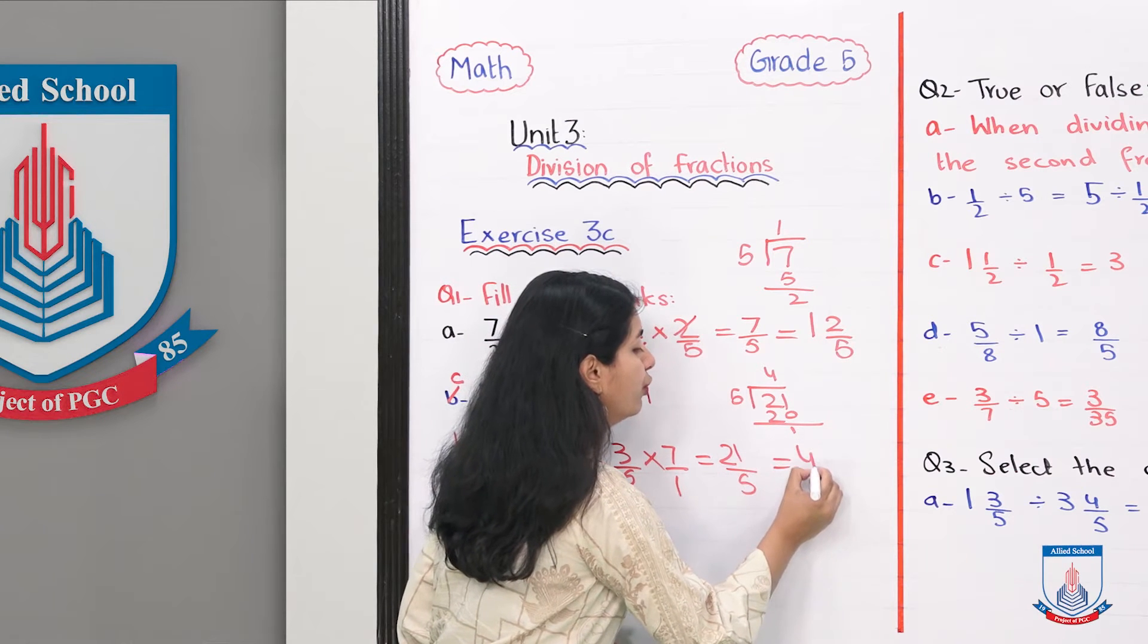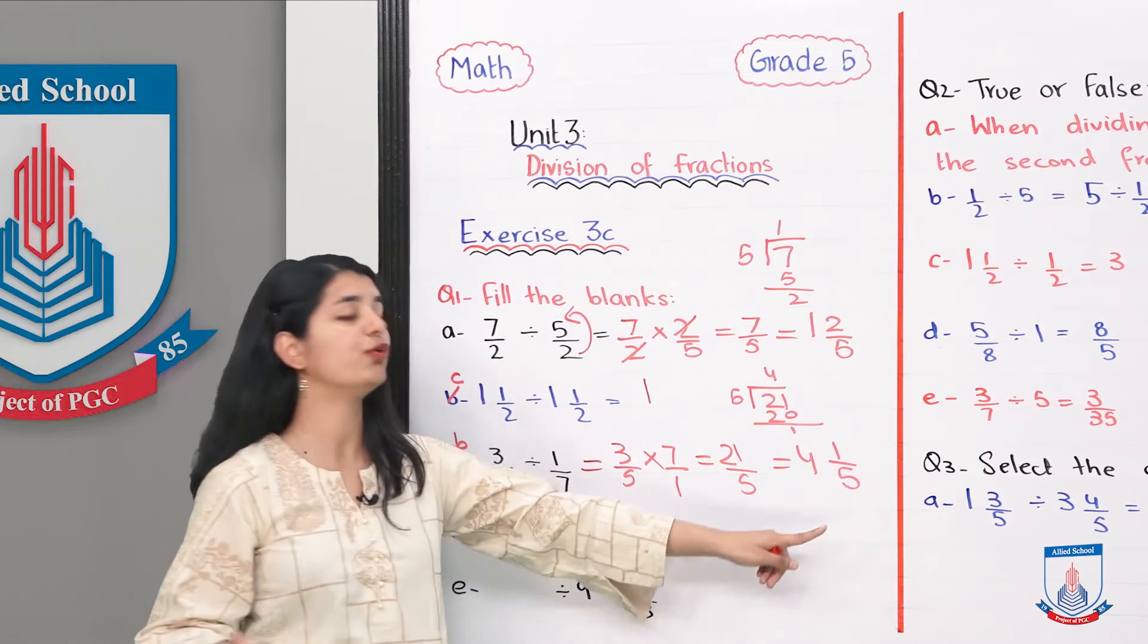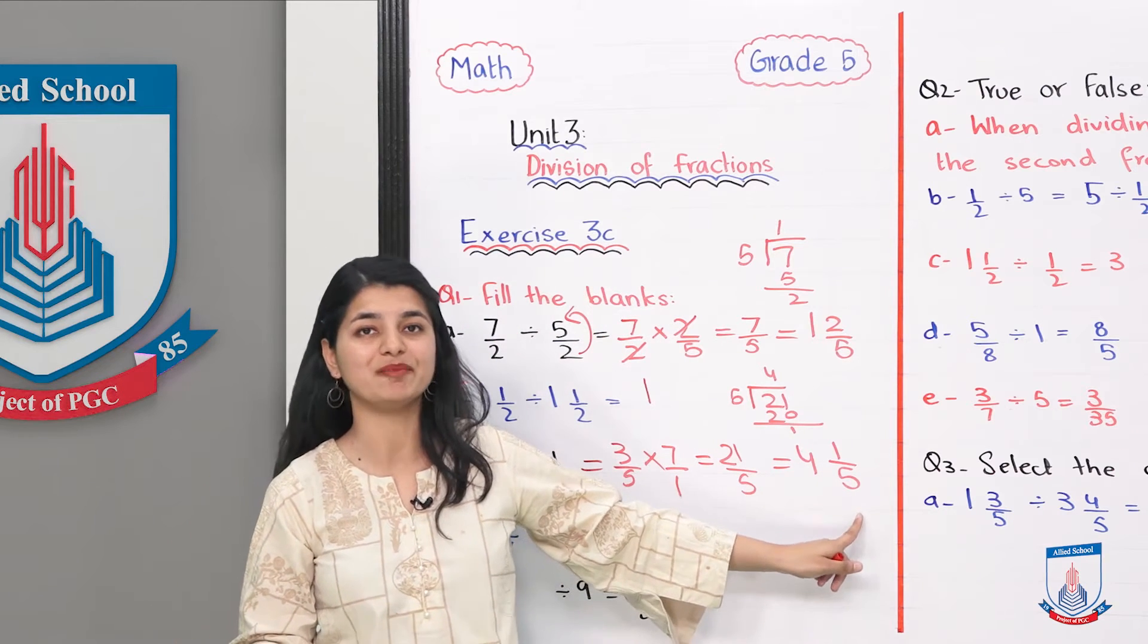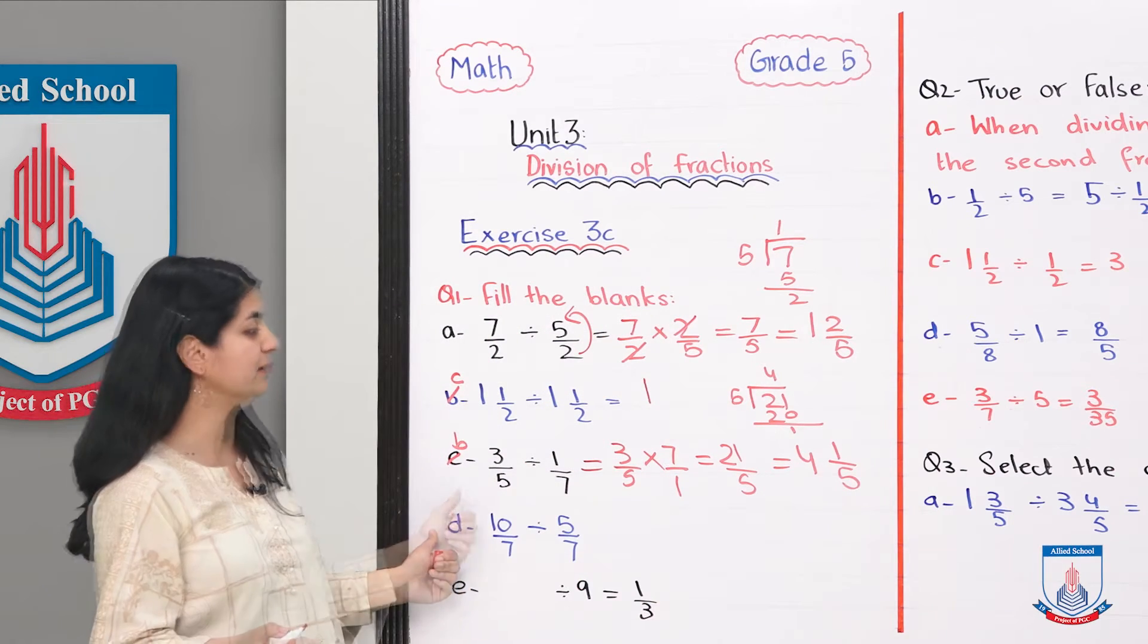We will also change to mixed fractions. Divide 21 by 5, 5 times 4 is 20, so your answer is 4 whole 1 by 5. This will be your answer for part B.